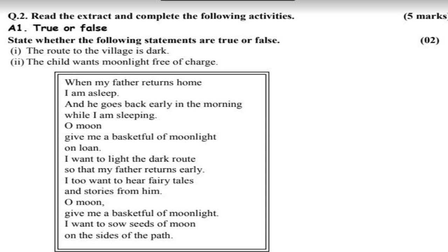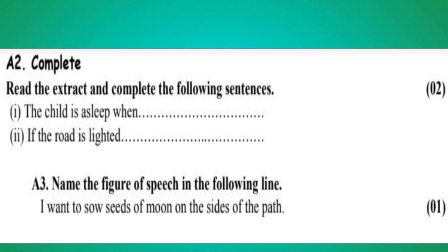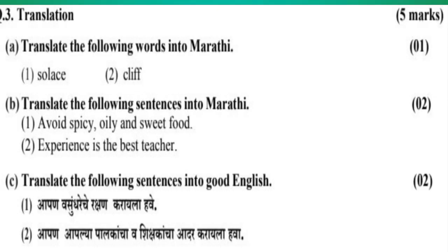Continuing the extract: 'O moon, give me a basket full of moonlight. I want to sow seeds of moon on the sides of the path.' A2: Complete the following sentences. 1. The child is asleep when... 2. If the road is lighted... A3: Name the figure of speech in the line 'I want to sow seeds of moon on the sides of the path.' Question 3 Translation: A. Translate into Marathi: 1. solace, 2. cliff. B. Translate into Marathi: 1. Avoid spicy, oily and sweet food. 2. Experience is the best teacher. C. Translate into good English: 1. Apan vasundhari che rakshan karaila hawe. 2. Apan apalya palakaan sa o shikshakaan sa adar karaila hawa.